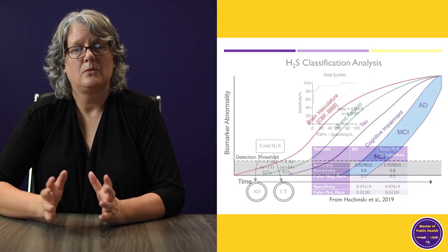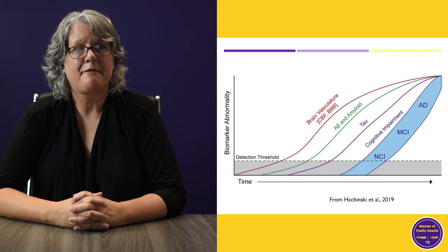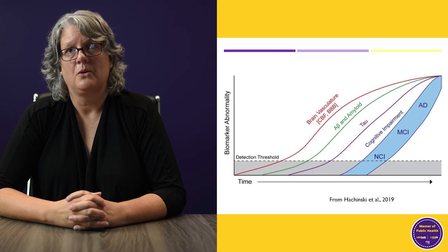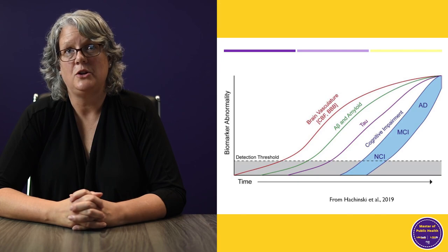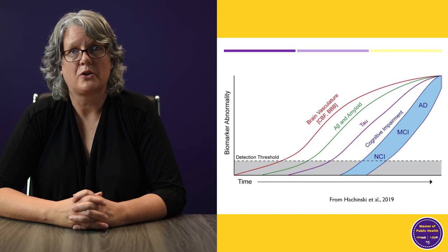We're not the only people having success with research on the vascular component of the disease. This graph shows over time that there are several important biomarkers — obviously beta amyloid and tau — but a new red line has recently been added to show that vascular abnormalities are thought to happen first, before we start seeing beta amyloid and tau problems.